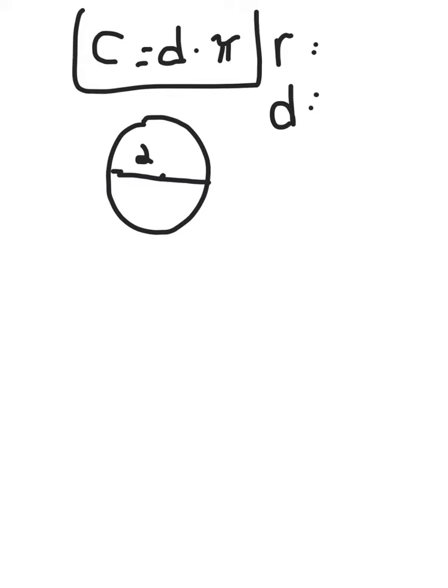For this one, you really need to know that circumference equals diameter times pi. The radius is from the edge of the circle to the center, and the diameter would be from edge of the circle through the center to the other side.